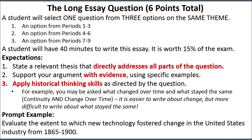A student will select one question from three options on the same theme — could be feminism, could be economics, something dealing with war. You have a choice from periods 1 through 3, 4 through 6, and 7 through 9, so you get a lot of freedom. A student will also have 40 minutes to write the essay, and it's worth 15% of your overall score on the APUSH exam.